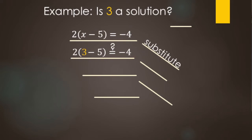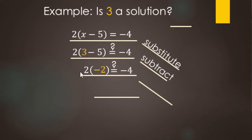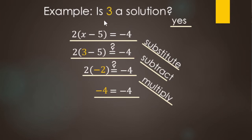We'll start with order of operations — parentheses first. Subtracting: three minus five is negative two. We still have the two and the equals — question mark — negative four. That question mark means we're checking to see if it is equal. Next we do the multiplication: positive times negative makes a negative, two times two makes four, so negative four. And negative four does indeed equal negative four — that's a true statement. So yes, three is a solution.